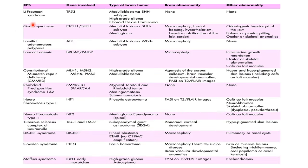The syndromes associated with brain tumours include: Li-Fraumeni syndrome, associated with TP53 mutation, linked to medulloblastoma SHH subtype, high-grade gliomas and choroid plexus carcinomas. Gorlin syndrome, associated with PTCH1 mutation, linked to medulloblastoma SHH subtype and meningiomas. Familial adenomatous polyposis coli, associated with APC gene mutation, seen in medulloblastoma WNT subtype. Fanconi anaemia has been associated with BRCA2 and PALB2 mutations, with individuals usually having microcephaly. Constitutional mismatch repair deficiency — MLH1, MSH2, MSH6, PMS2 — has been associated with high-grade gliomas and medulloblastoma.